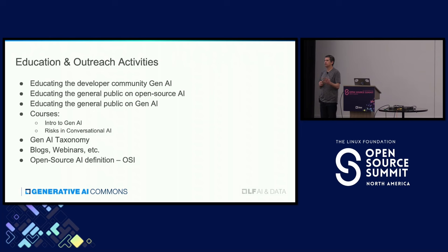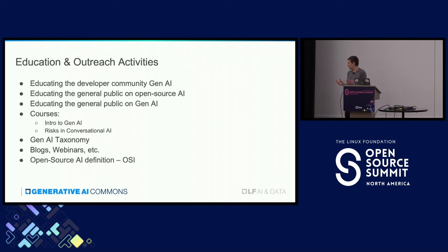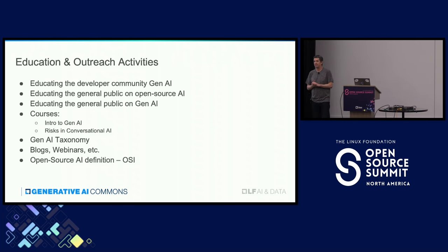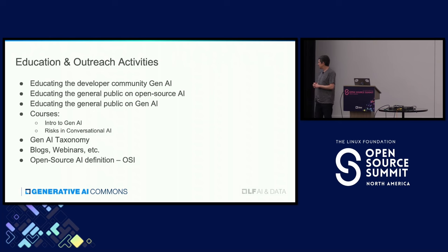I am personally also contributing to Open Source AI. There is a task force by the OSI — the Open Source Initiative — which is the organization that defines open source licenses and the definition of open source. We are working with them to have a clear and agreed definition of what open source AI is, and this is something we are actively contributing to.